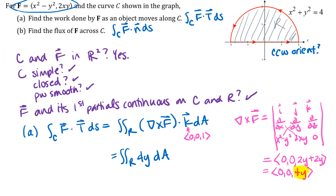So we need the double integral over region R of 4y dA, where R is the region enclosed by the curve. Our region R is the top half of a circle centered at the origin. We use polar coordinates: theta from 0 to π, r from 0 to 2. Y equals r sin θ, and dA in polar coordinates is r dr dθ. I can tell from looking at the region that we should expect a positive answer.